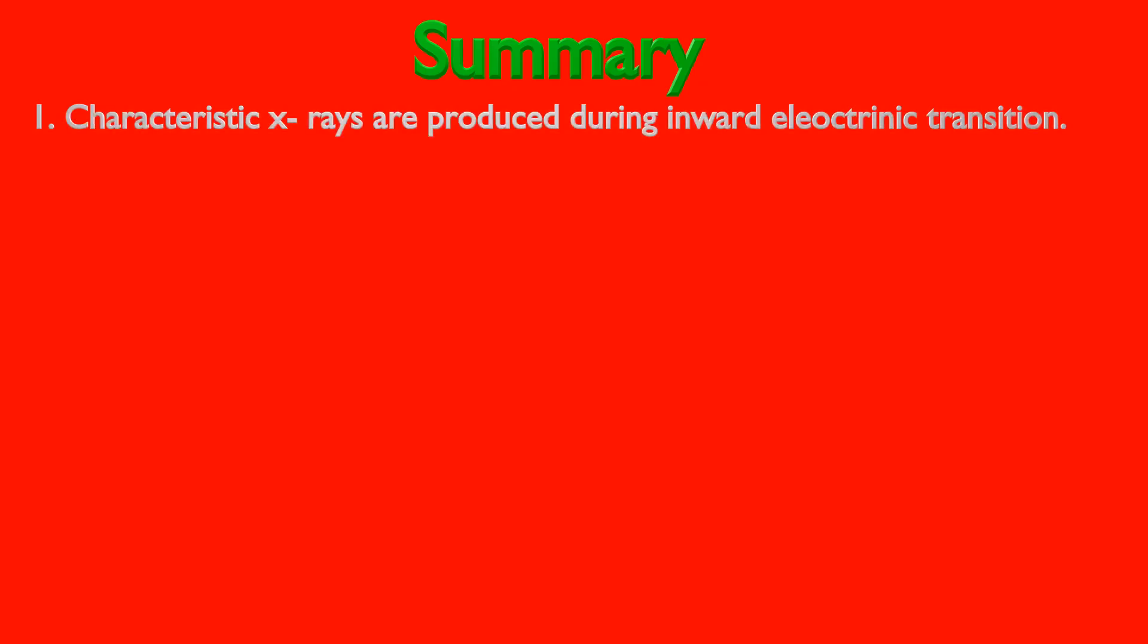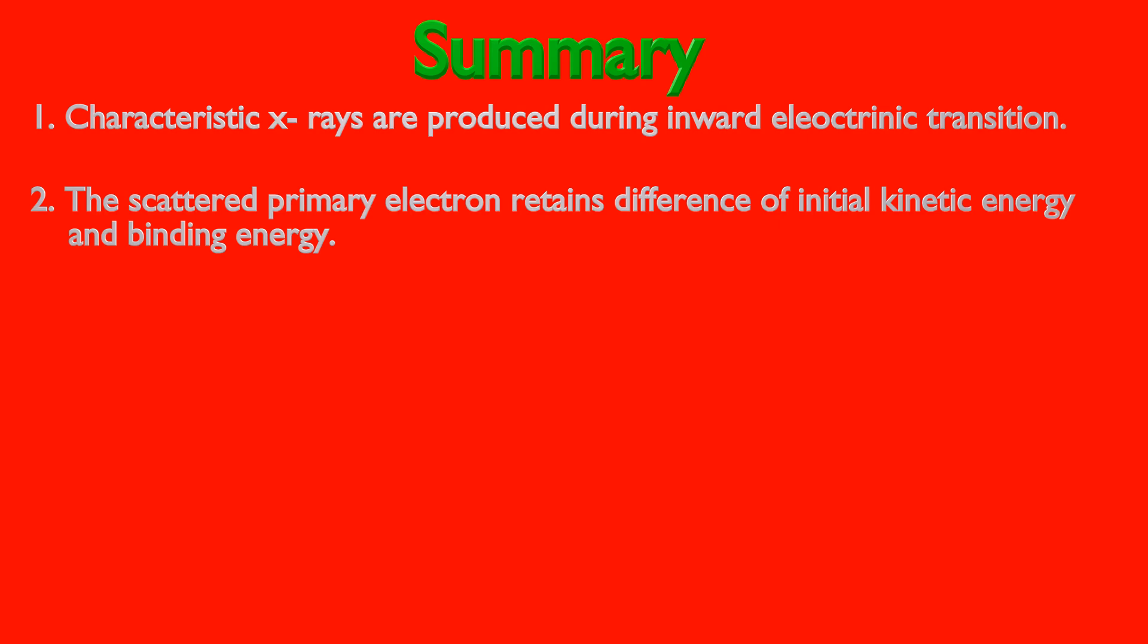Characteristic X-rays are produced during inward electronic transition. If energy of emitted electromagnetic radiation is more than 100 electron volts we call it an X-ray. If below 100 eV, it will be an ultraviolet or a visible ray. The scattered primary electron retains energy equals the difference of kinetic energy and binding energy.